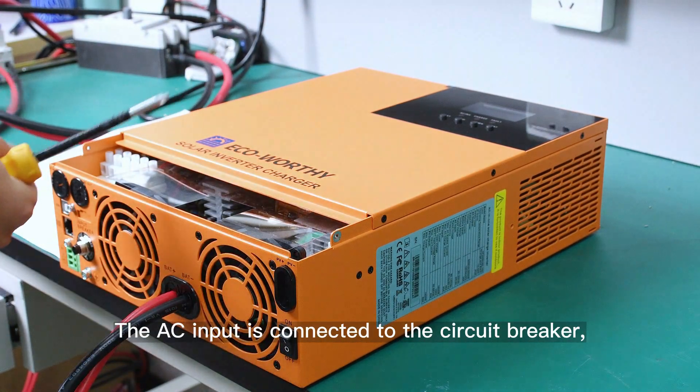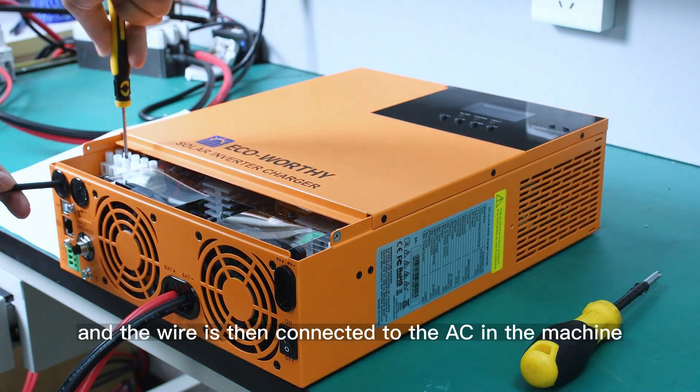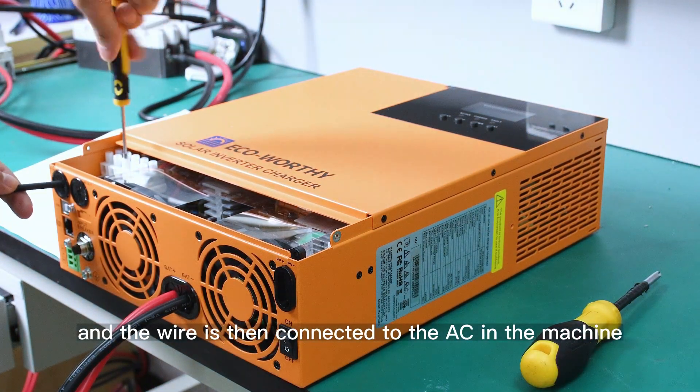The AC input is connected to the circuit breaker, and the wire is then connected to the AC in the machine.